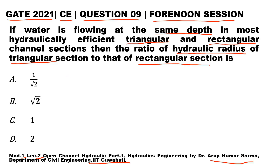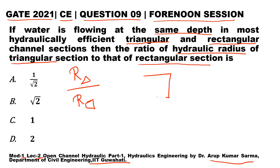In the question it is asked the ratio of hydraulic radius of the triangular section to that of the rectangular section. Both channels are hydraulically efficient and water flows to the same depth in both of them. For a rectangular channel, the hydraulic radius R is equal to y/2, where y is its depth.